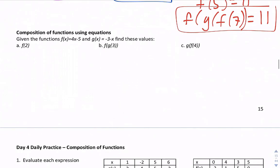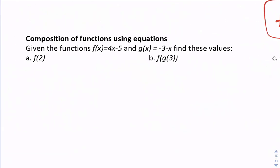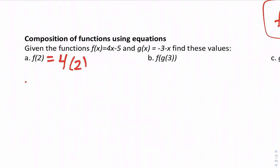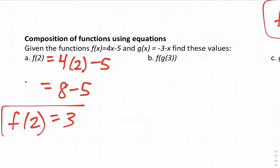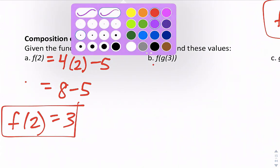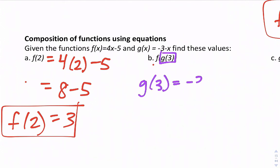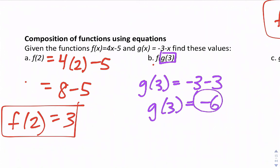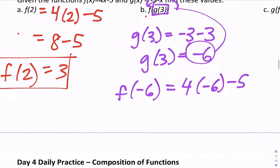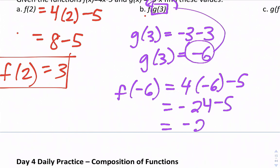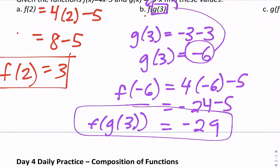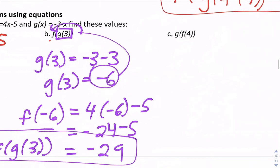Last, composition using equations. Quick review: f(2) = 4(2) − 5 = 8 − 5 = 3. Now find f(g(3)): start with g(3) = −3(3) = −9... wait — g(3) = −3 − 3... actually g(3) = negative six. Now plug −6 into f: f(−6) = 4(−6) − 5 = −24 − 5 = −29. So f(g(3)) = −29.